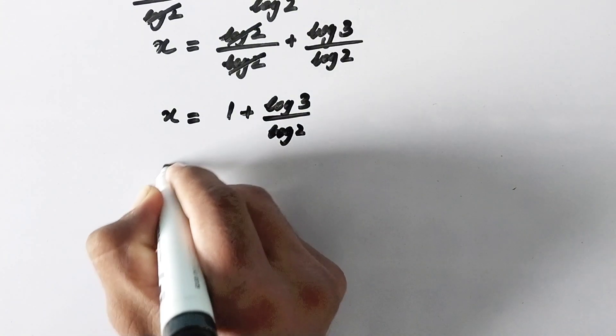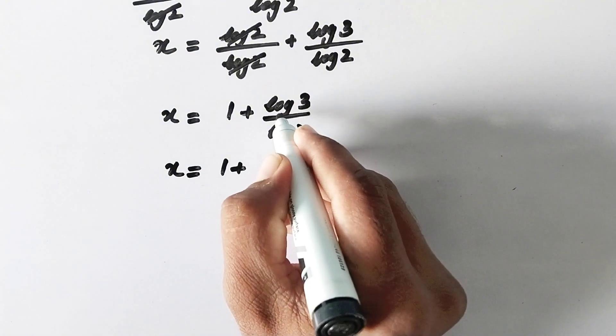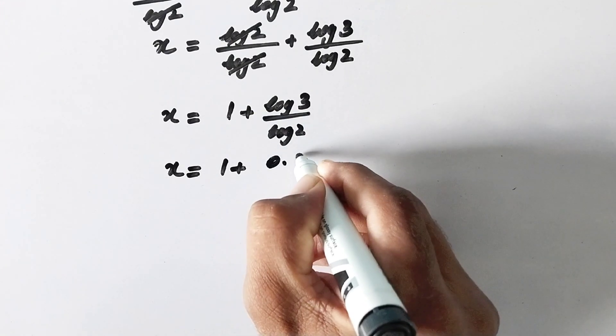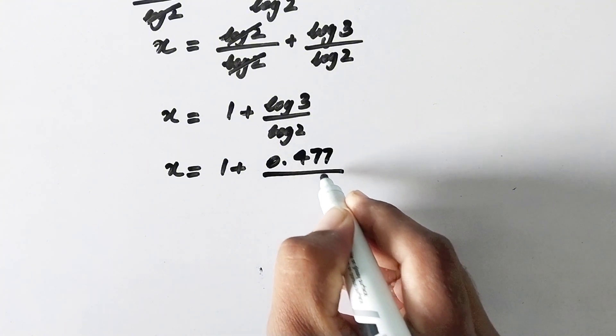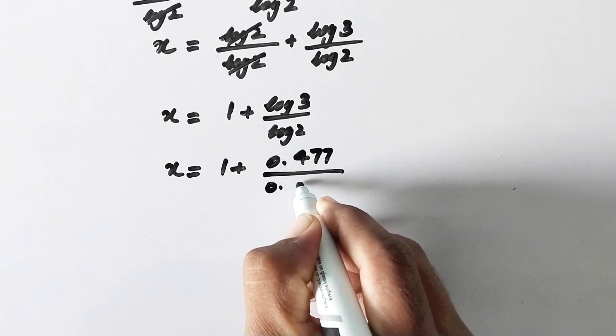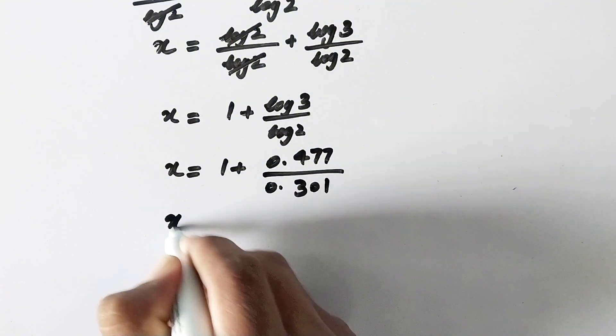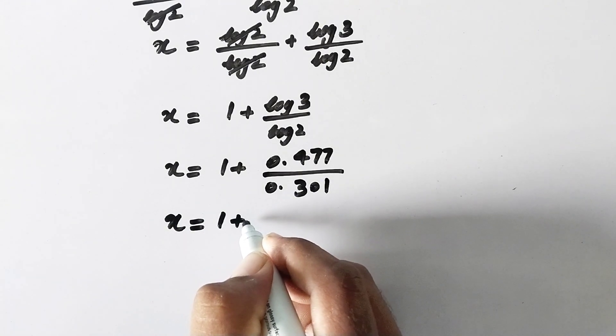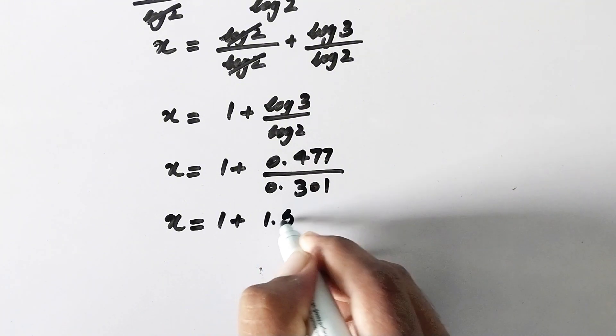which is 0.477 over the value of log of 2, which is 0.301. Now we will get x equals 1 plus, by division here it is equal to 1.58.